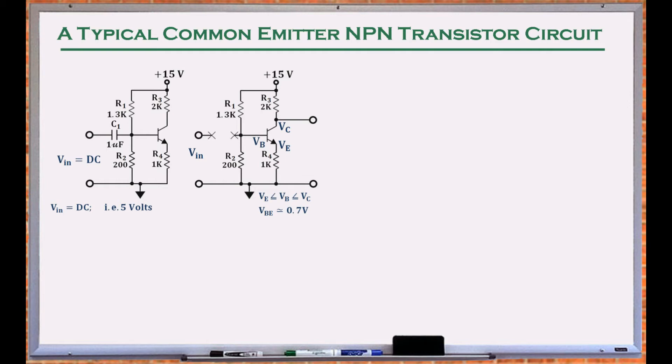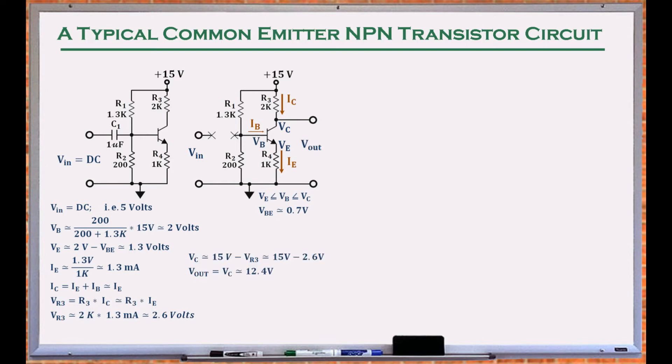C1 acts as an open and blocks any DC voltage from the base. Therefore, the voltage at the base is about 2 volts and at the emitter about 1.3 volts, guaranteeing an active operation for the transistor. This circuit is said to be self-biased. The emitter current flowing through R4 is about 1.3 mA. Almost the same amount of current must flow through collector and R3. This makes the collector voltage and the output about 12.4 volts.